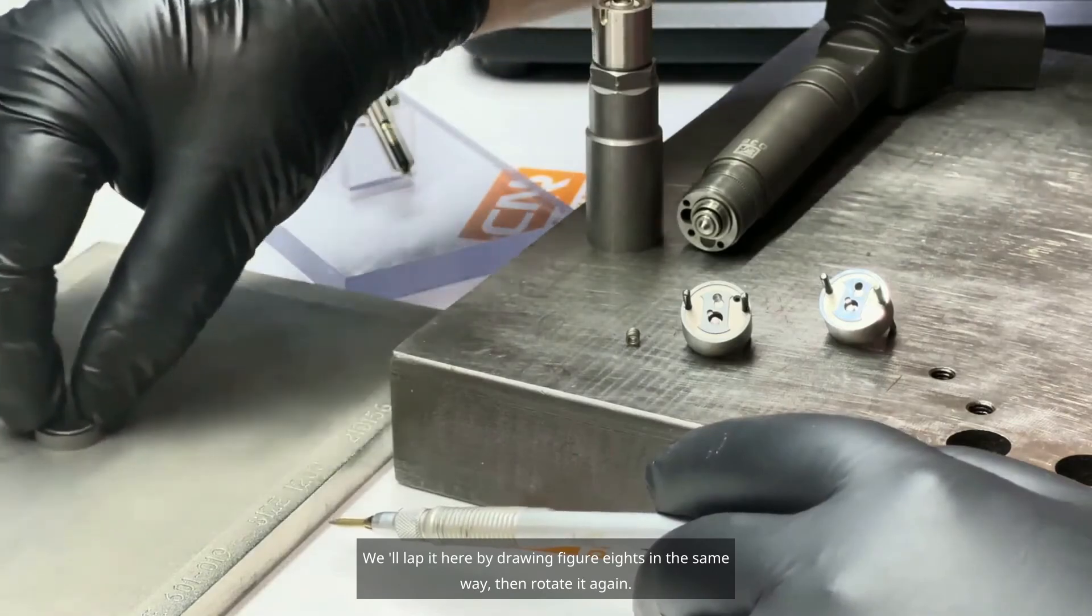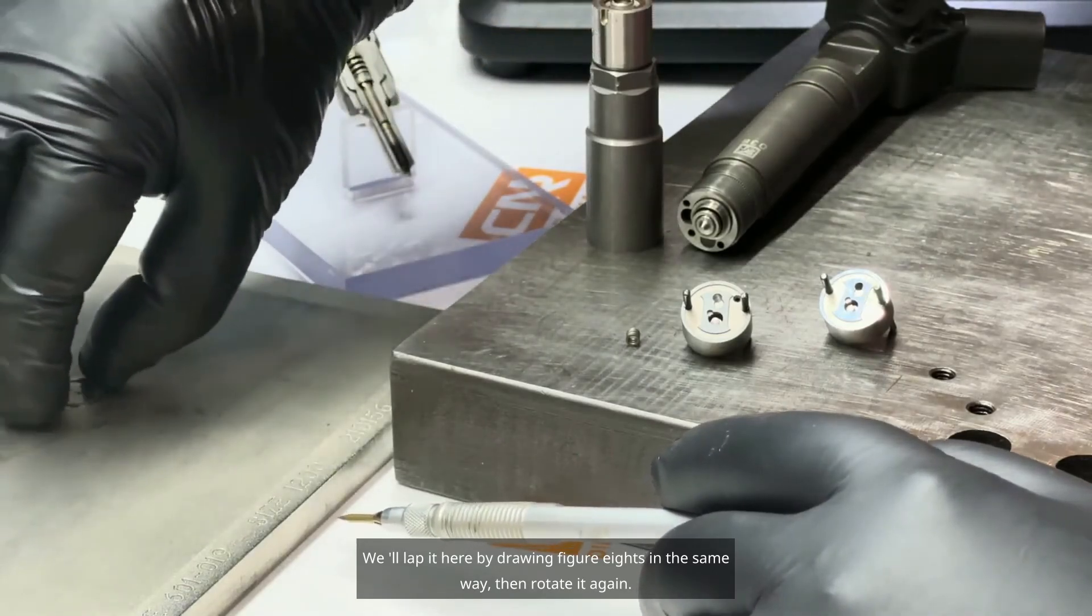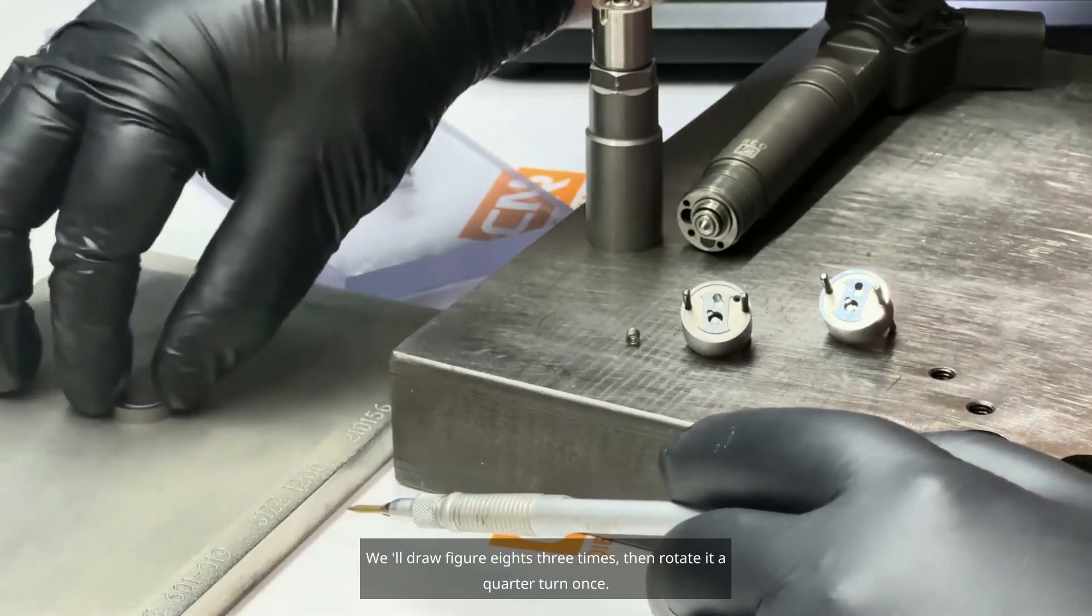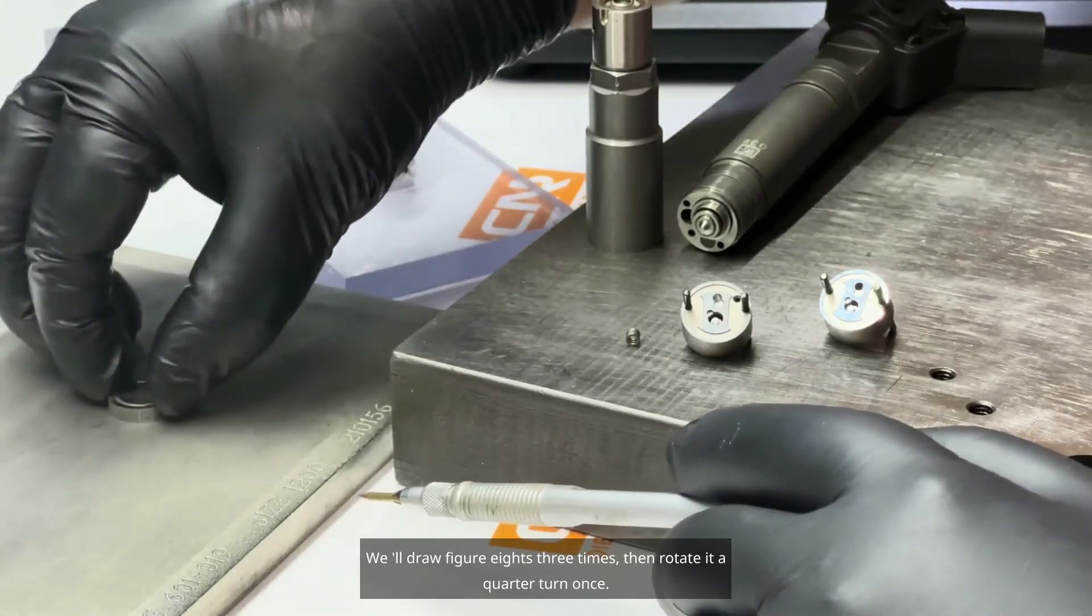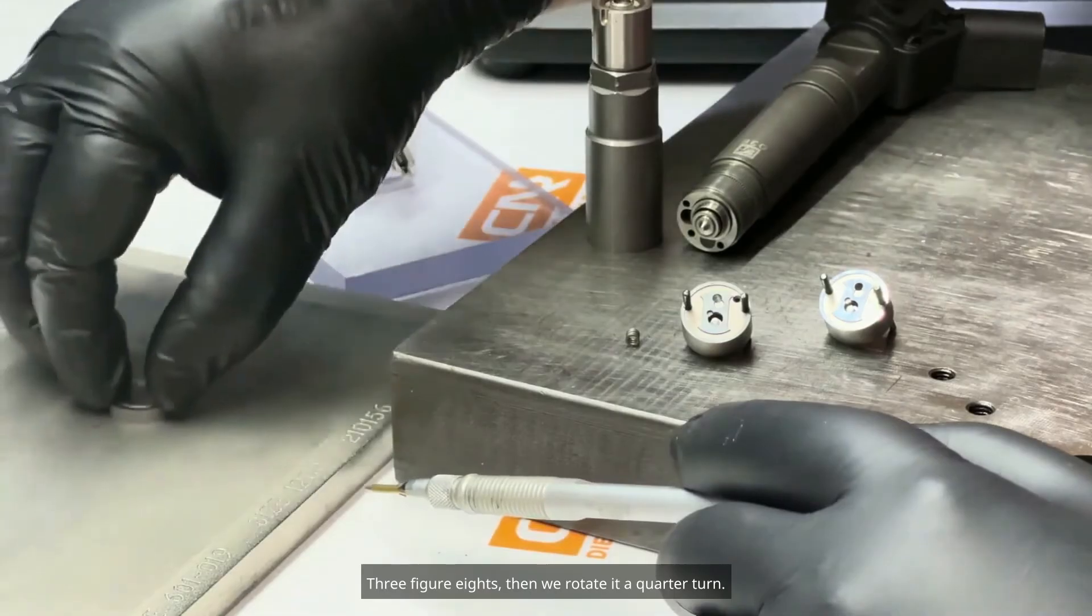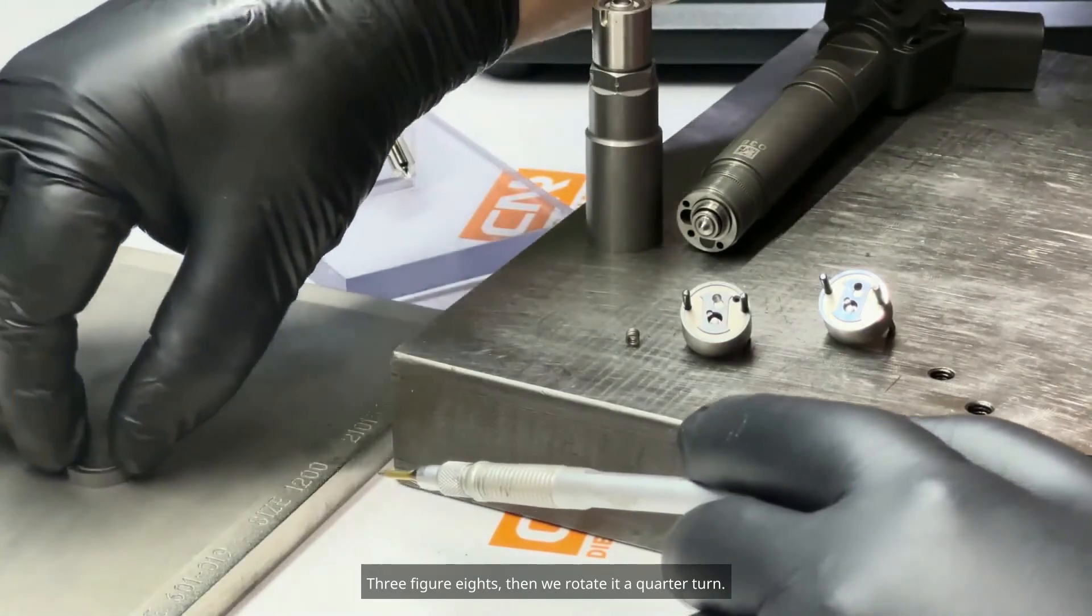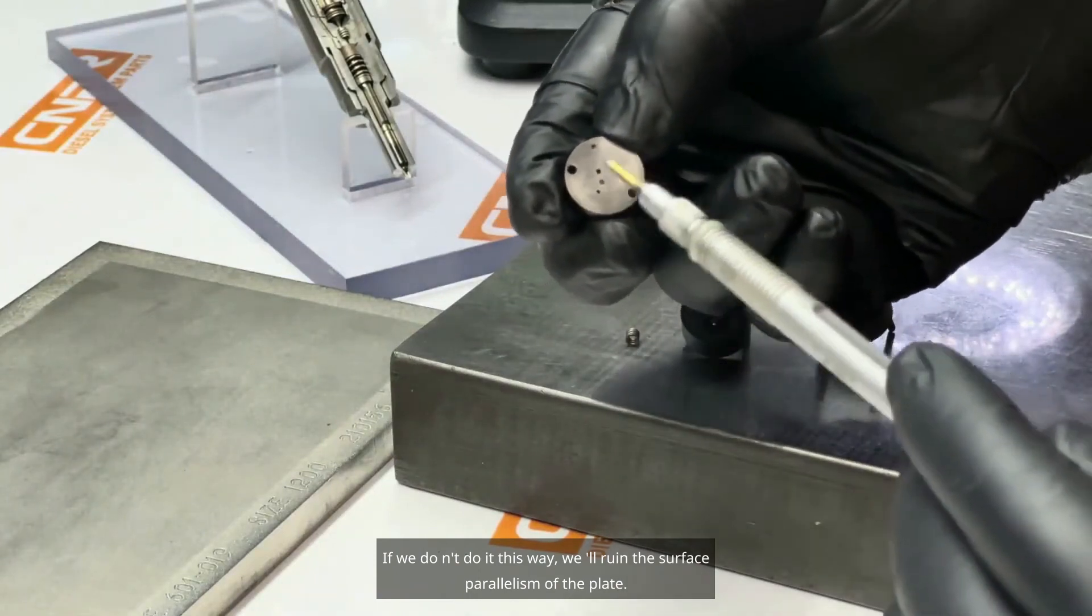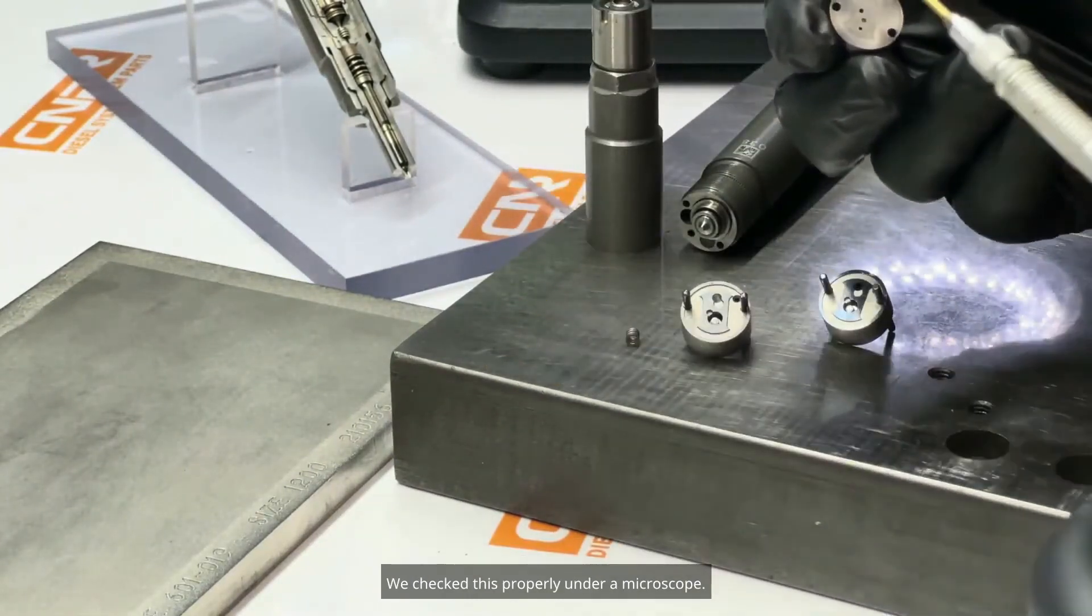We'll lap it here by drawing figure eights in the same way, then rotate it again. We'll draw figure eights three times, then rotate it a quarter turn once. Three figure eights, then we rotate it a quarter turn. If we don't do it this way, we'll ruin the surface parallelism of the plate. We check this properly under a microscope.